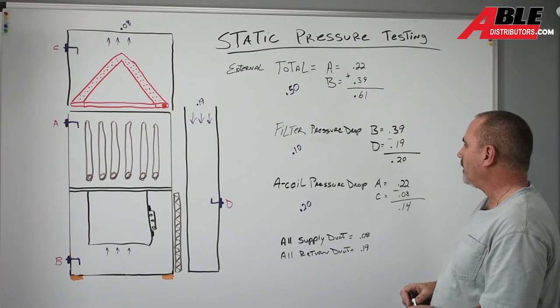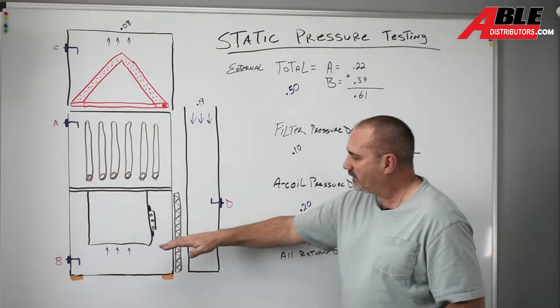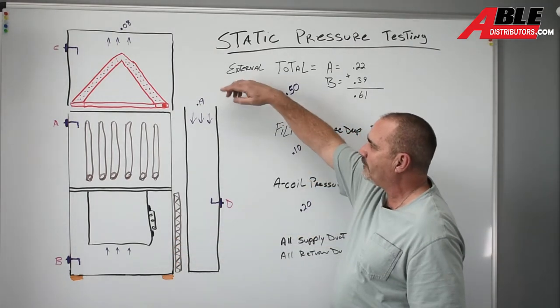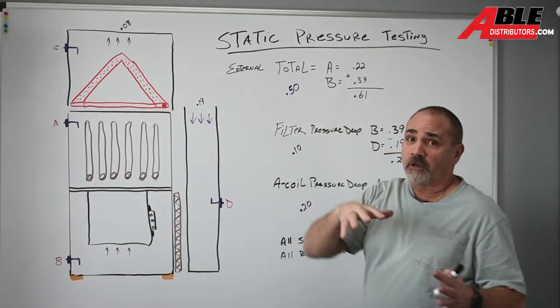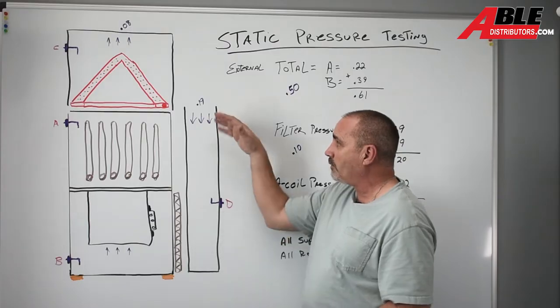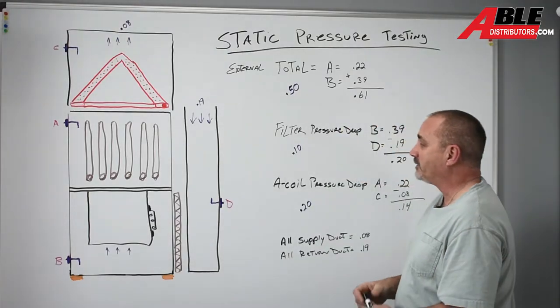So we know something's going on there, but that tells us another thing. It tells us that all the duct work past that, the static is 0.19, and that's also kind of high. So we're seeing more problems on the return side in this scenario than on the supply side. But let's double check it.